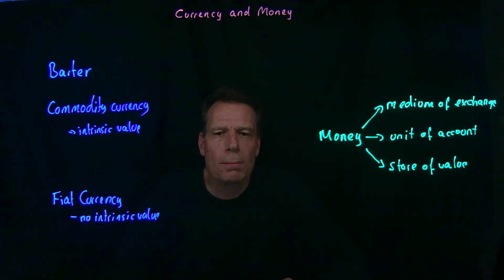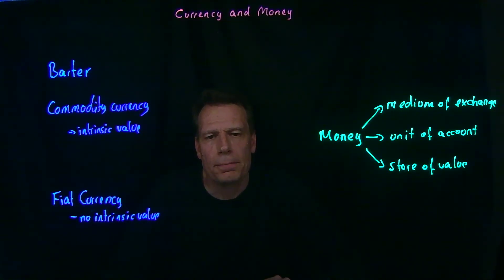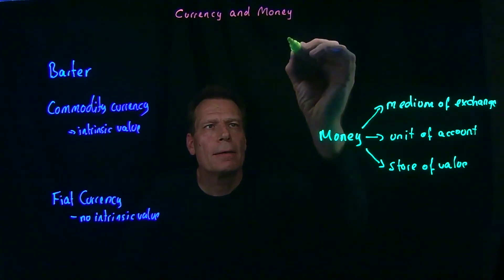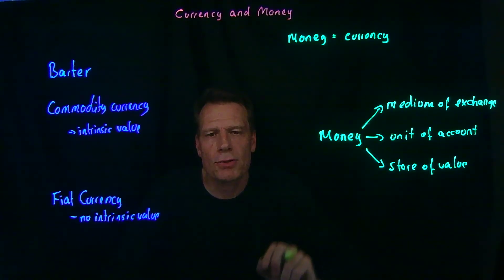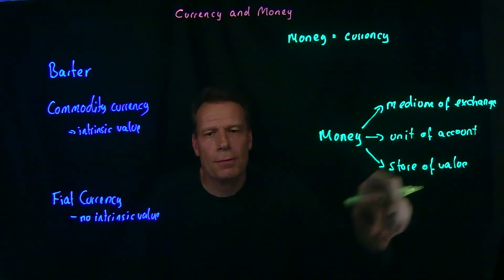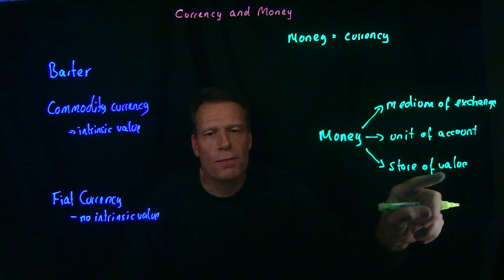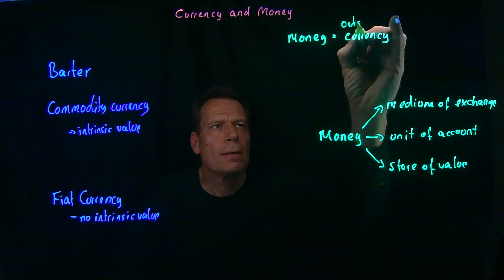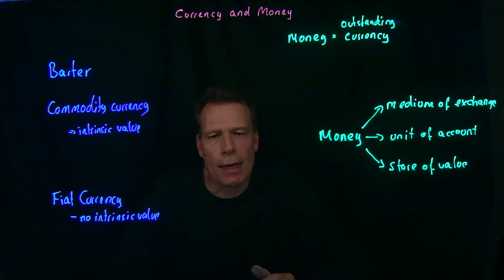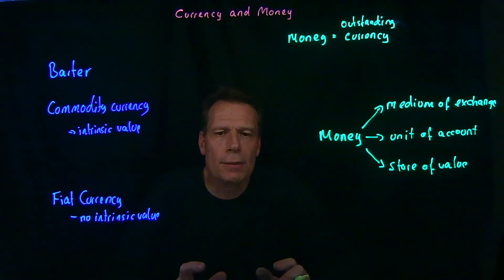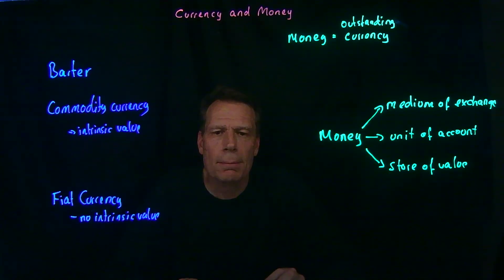Lots of things can store value, and when people ask 'how much money do you have?' and really mean 'how wealthy are you?', they're asking how many assets you have that store value. But money certainly includes currency, because currency is a medium of exchange — you can buy milk and eggs with it. It's a unit of account with dollar values printed on it, and it stores value. What about a checking account? I can link a debit card to my checking account and use it at the supermarket, or simply write a check. A savings account linked to a debit card serves a similar purpose. So those would also be considered money.